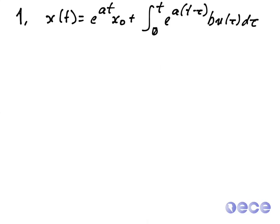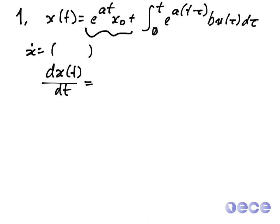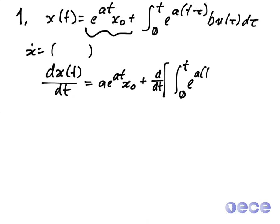Since we're checking to see whether X dot equals something, let's go ahead and take the derivative of our solution, dX/dT. The derivative of the first part is A times E to the AT times X zero, because X zero is just a constant value. And then we have to take the derivative of the integral from zero to T of E to the A of T minus tau times B U of tau D tau with respect to time. To do this, we can recall a convenient result from Leibniz.